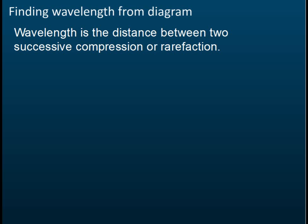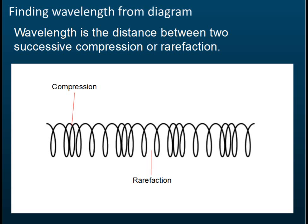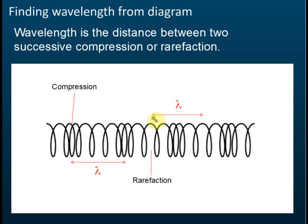For a longitudinal wave, we don't have crests and troughs, so how do we find the wavelength? The wavelength is the distance between two successive compressions. We have one compression here and the next compression here, so the distance between two successive compressions is the wavelength. Wavelength is also the distance between two successive rarefactions.